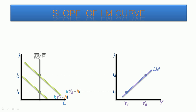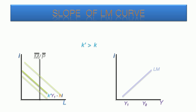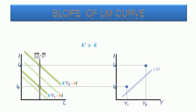Now we're going to examine the determinants of the LM curve slope. Here we have the original LM curve. We're going to increase the income sensitivity of demand for real money, K. When we graph the new demand for money curves on the left, they have shifted upward. Because K prime is a coefficient of Y, the upward shift for Y2 will be even more pronounced. When the new equilibrium interest rates, I3 and I4, are extended over to the LM space, we can see that the slope of the LM curve has increased.